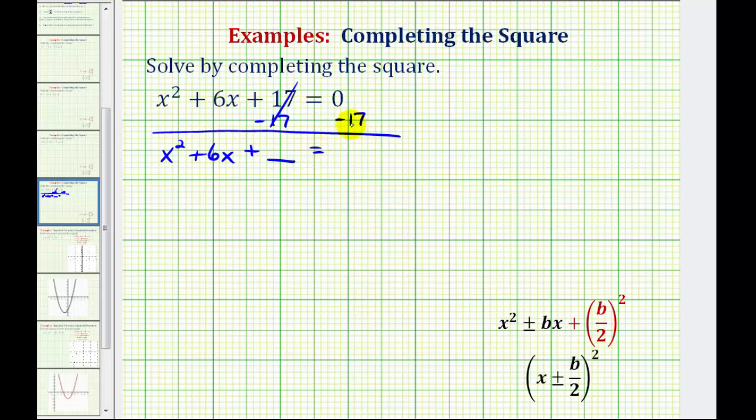And then on the right side of the equation, we have negative 17. And if we add a constant on the left side of the equation, we're going to have to add the same constant to the right side. So we'll add the constant here as well.